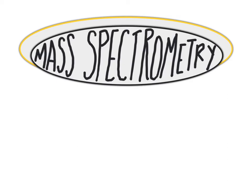Mass spectrometry, or MS for short, is a critical technique in bioanalytical chemistry and chemical biology. In this video, we are going to walk through an introduction to mass spectrometry, including an overview of how molecules are detected using mass spectrometry and the components of a mass spectrometer.